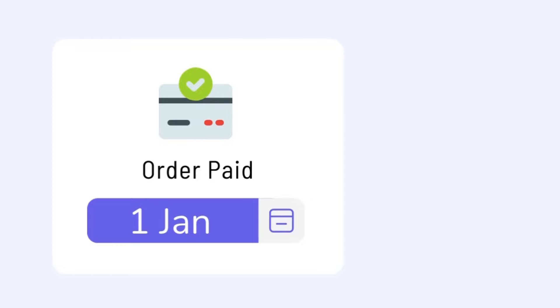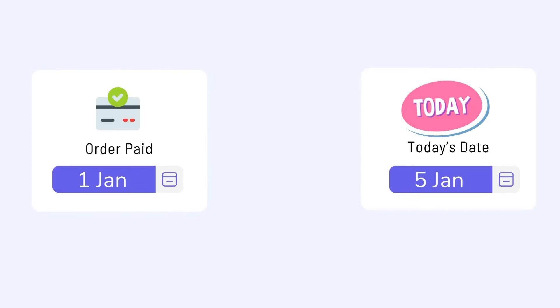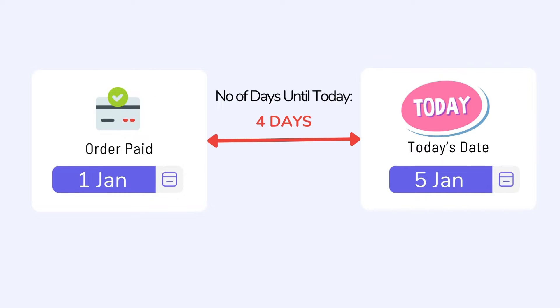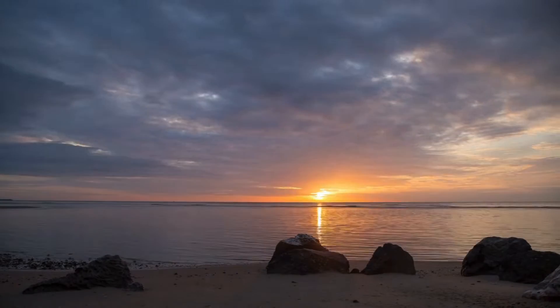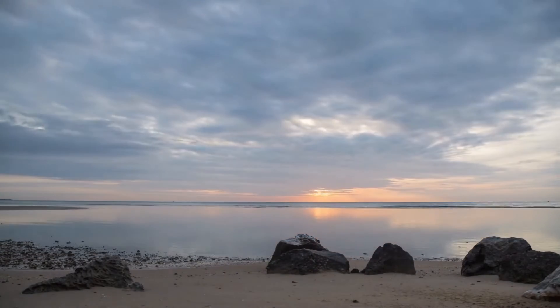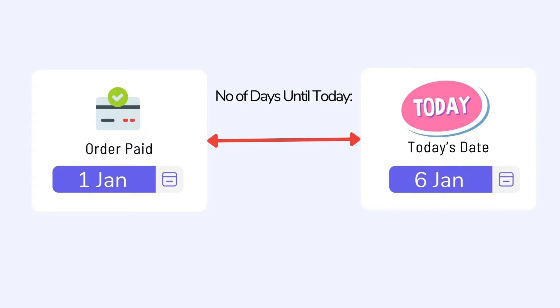For example, say we have the order date on 1st January and today's date is 5th January — you will get a result of 4 days. Now if we move on to the new day, which is 6th January, the result would be 5 days. This means the calculation will always be updated automatically using this method.